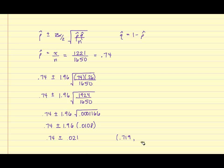In order to get the upper bound, I'm going to take 0.74 plus 0.021, and I get 0.761.